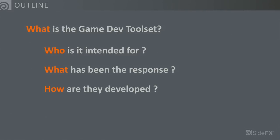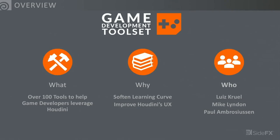So very quickly, I want to talk about who we are, what we do, and kind of how the tools are developed. Right now we have over a hundred tools in the game dev toolset. They're available on GitHub — you can download them from there or directly in Houdini. The whole point of these tools is for the games community to soften the learning curve getting into Houdini. Most people using Houdini in games have about one to three years of experience, so they're more junior and mid-level.